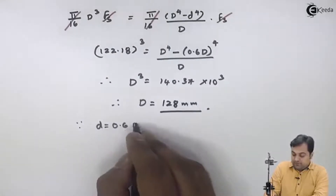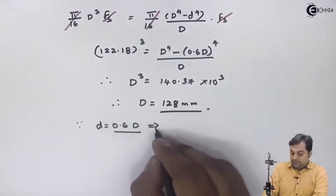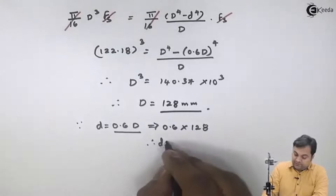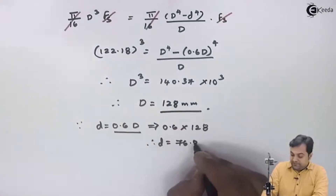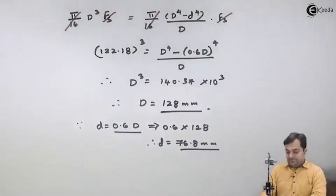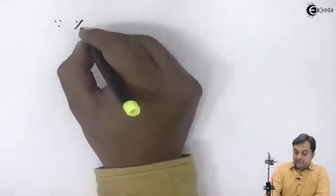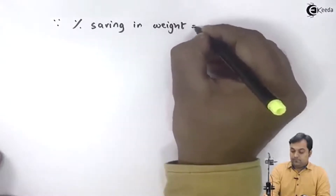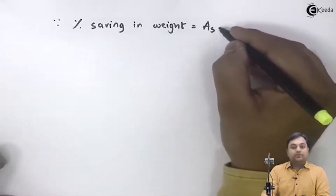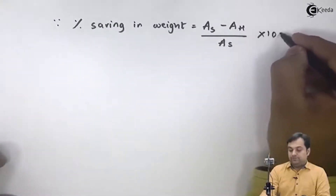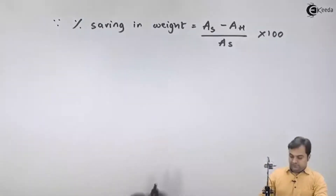Since small d = 0.6 times capital D, we get d = 0.6 × 128 = 76.8 mm. That is the inner diameter of the hollow shaft. Once I have capital D and small d, I can easily calculate the percentage saving in weight: it equals (area of solid shaft − area of hollow shaft) / area of solid shaft × 100.